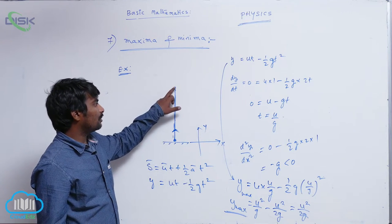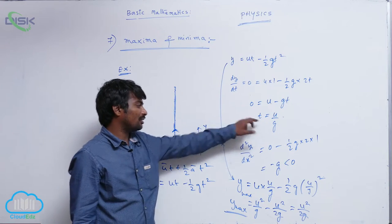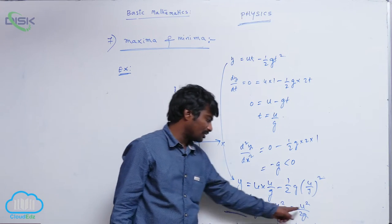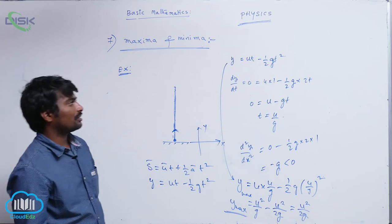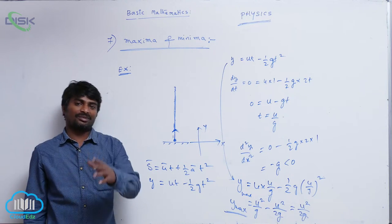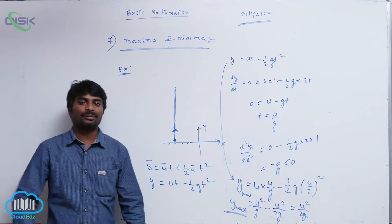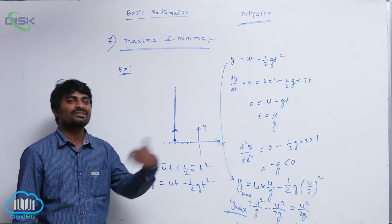So time taken to reach this maximum height is the time of ascent, and the maximum height reached is u² by 2g. Whenever the situation comes in physics that something attains maximum value, I will equate its differentiation with respect to that variable equal to zero.